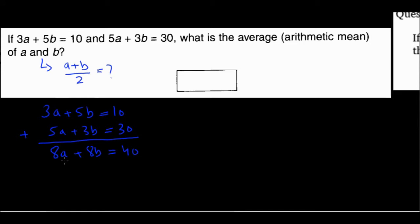And how about I factor out an 8 from the left side because 8 is present in the first term as well as the second term. So I factor out the 8 and I'm left with 8 times a plus b equals 40. Let's divide both sides by 8.